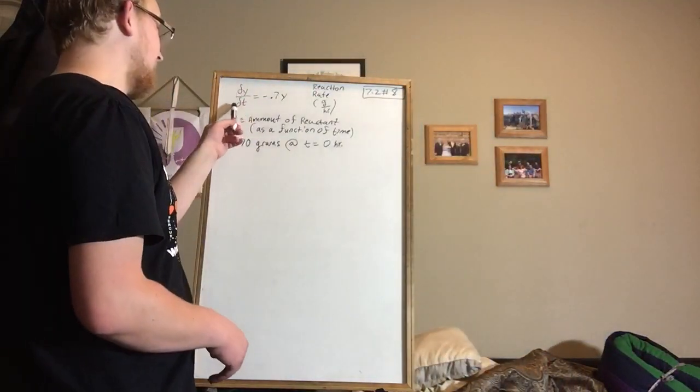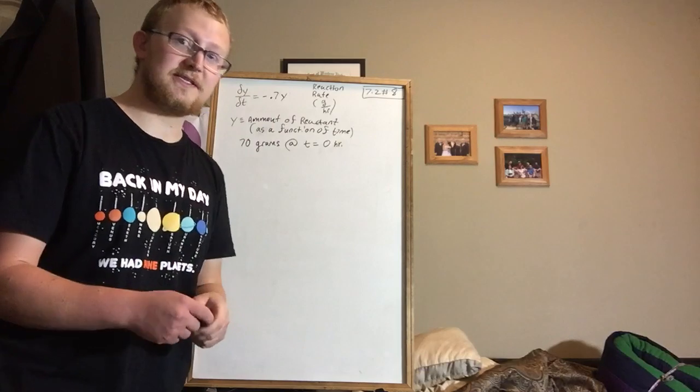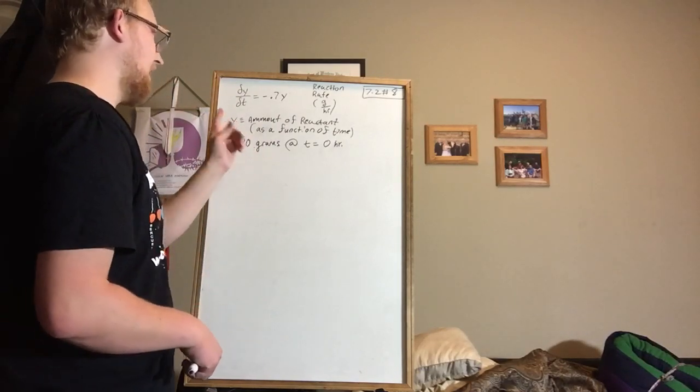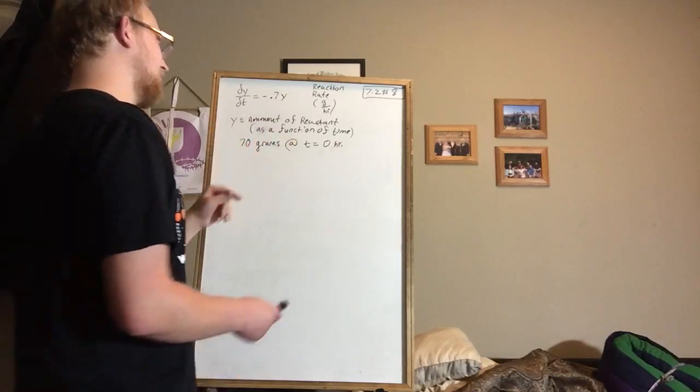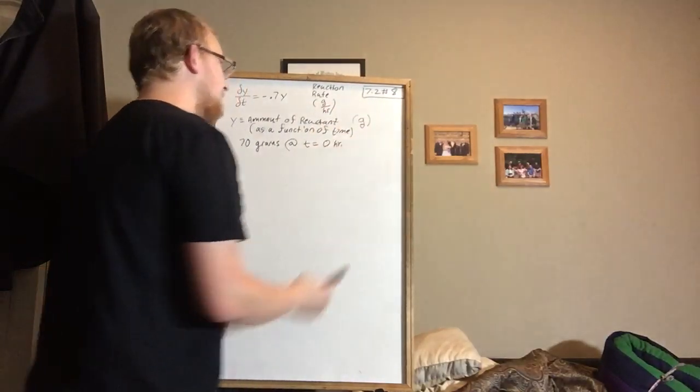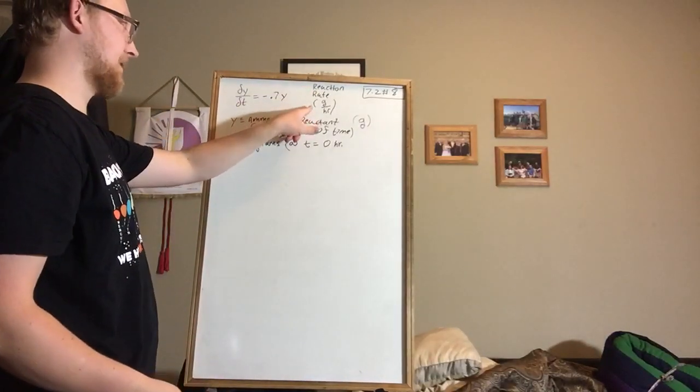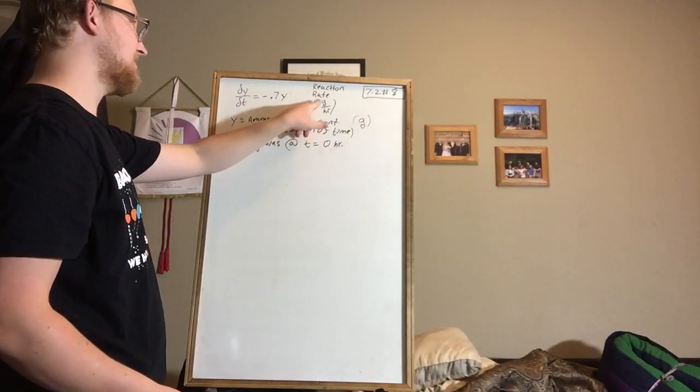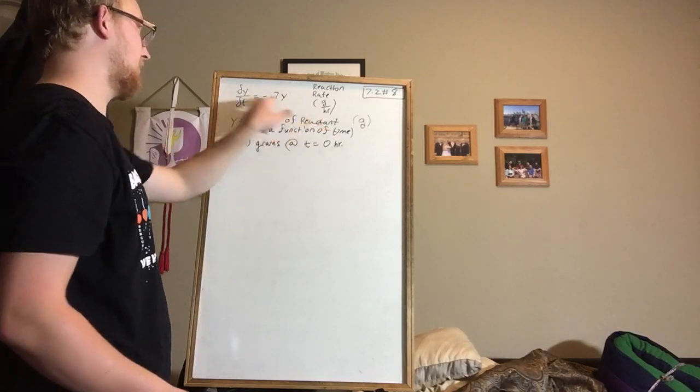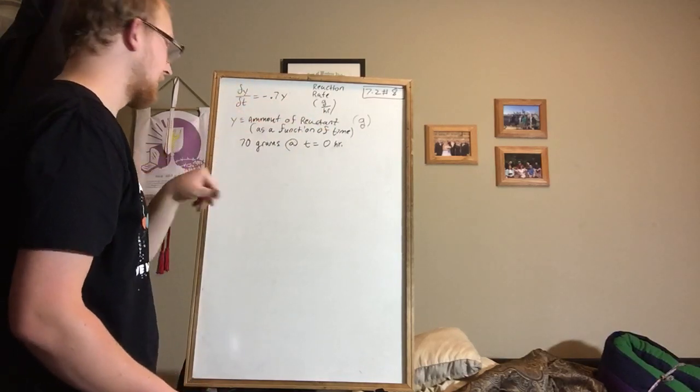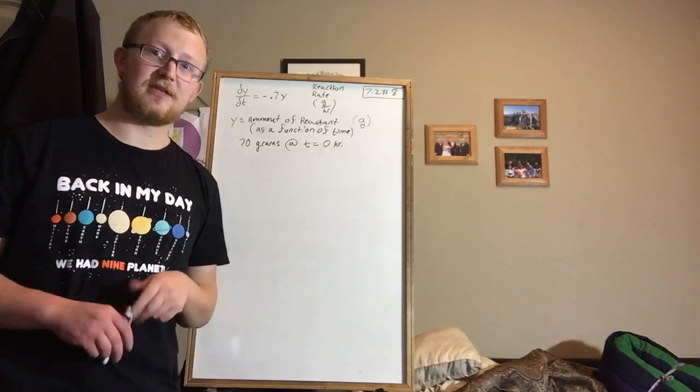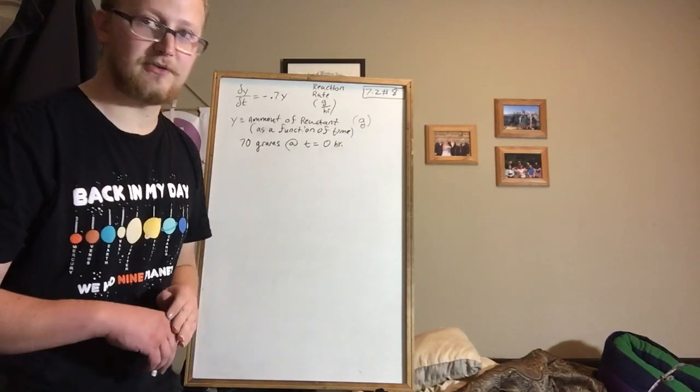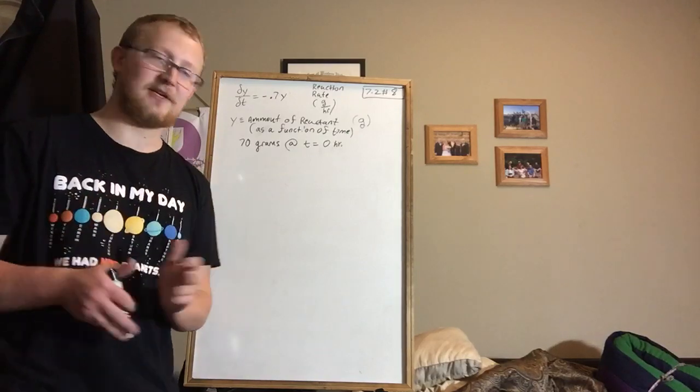It gives us a differential equation: dy/dt equals negative 0.7y. And it told us that y is representative of the amount of reactant as a function of time in grams. The reaction rate was in grams per hour. Therefore, y is in grams and t is in hours, grams per hour. At t equals 0 there are 70 grams. So that's our initial value that we're going to use to solve this specific differential equation.